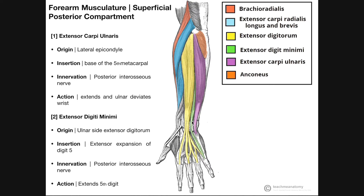In the previous two videos we looked at the anterior compartment of the forearm and we saw that those muscles are primarily wrist flexors with a few other functions scattered in there. Here we're going to be looking at the posterior compartment, and what you should really think about is these muscles would be the antagonists of those in the anterior compartment because these are going to be wrist extensors with a few other functions scattered in there.